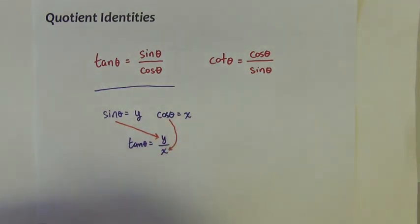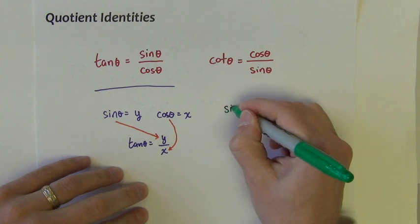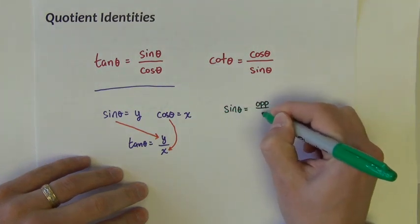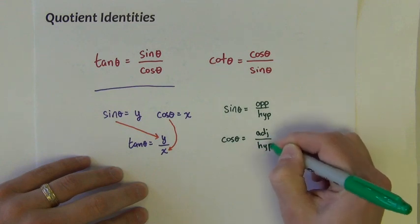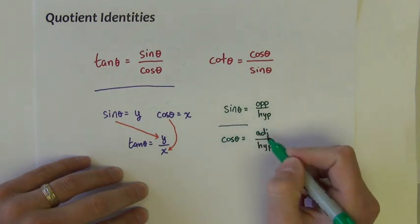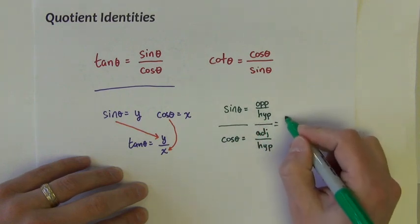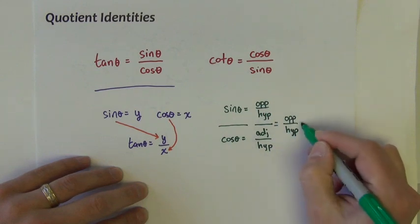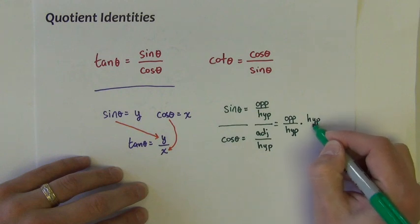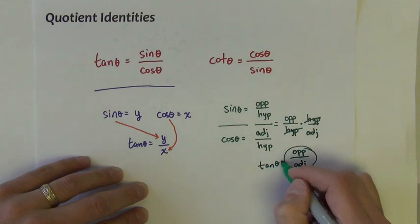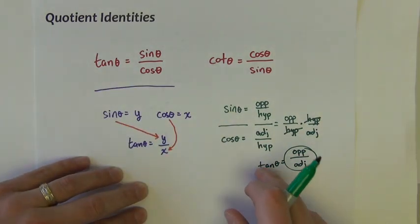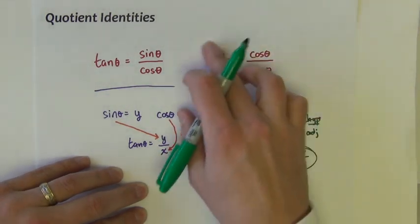A second way to prove this is to go back to our SOHCAHTOA definitions. We know that sine of theta equals opposite divided by hypotenuse, and cosine of theta equals adjacent divided by hypotenuse. If we divide these two quantities, that is opposite over hypotenuse multiplied by the reciprocal of the bottom fraction, which is hypotenuse over adjacent. The hypotenuses cancel and we're left with opposite divided by adjacent, which is our tangent definition. So tangent is sine divided by cosine, and the same sort of proof works for cotangent.